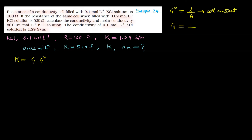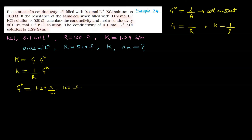G क्या होता है? This is conductance, which is reciprocal of resistance। और κ (kappa) क्या होता है? κ is conductivity, which is reciprocal of resistivity ρ। Cell constant G* = l/a। हमें यहाँ से G* calculate करना है। G* = κ × R। κ कितना है first solution के लिए? 1.29 siemen per meter, into resistance 100 ohm। Simon को ohm inverse लिखें तो ohm cancel हो जाता है। तो G* = 1.29 meter inverse।